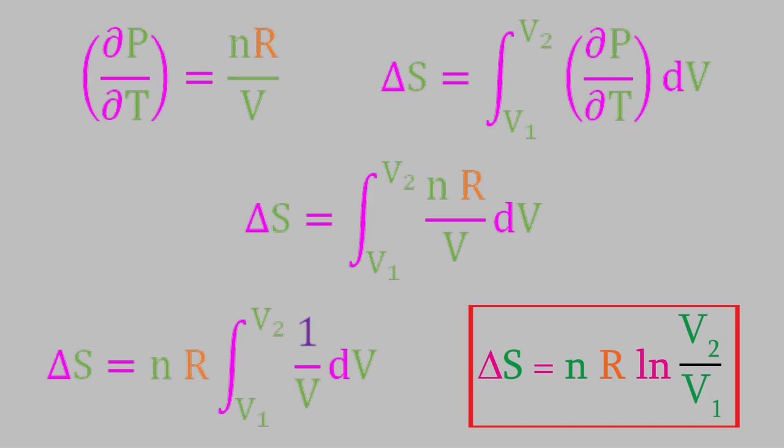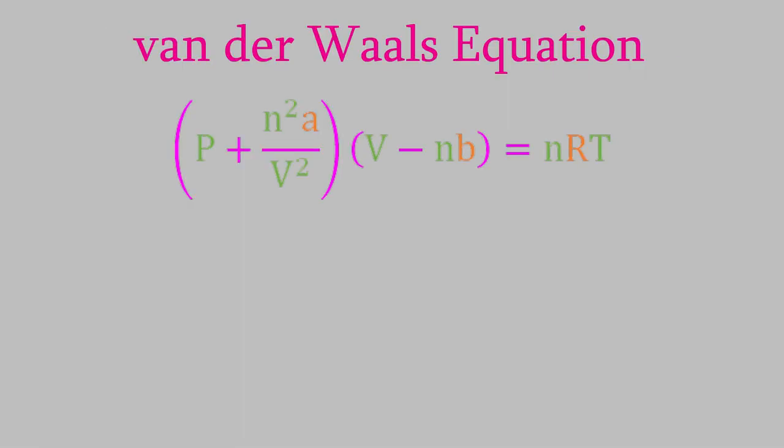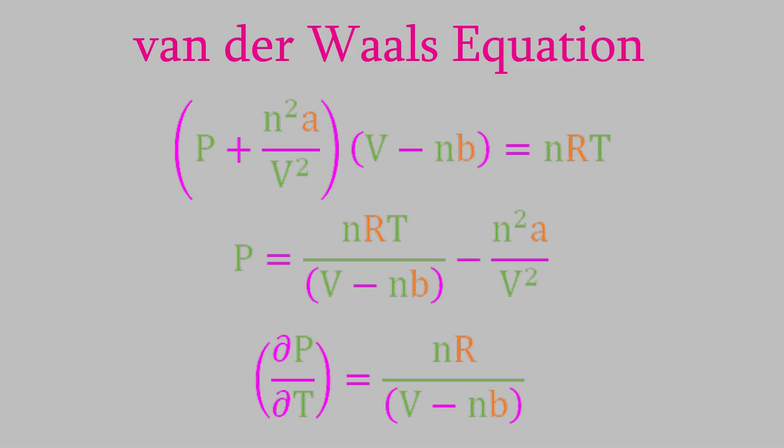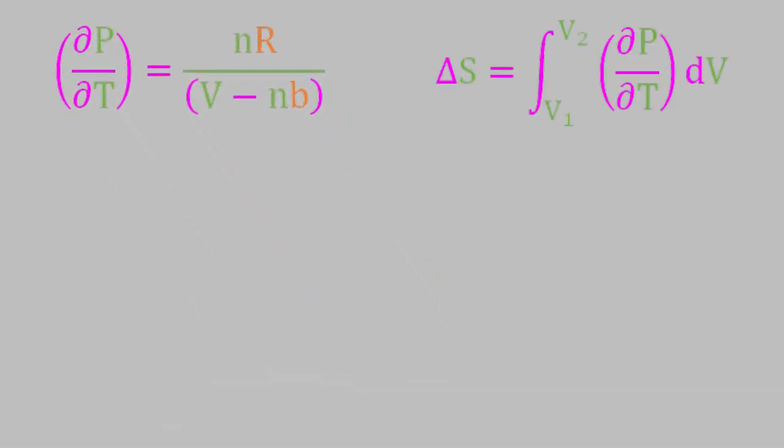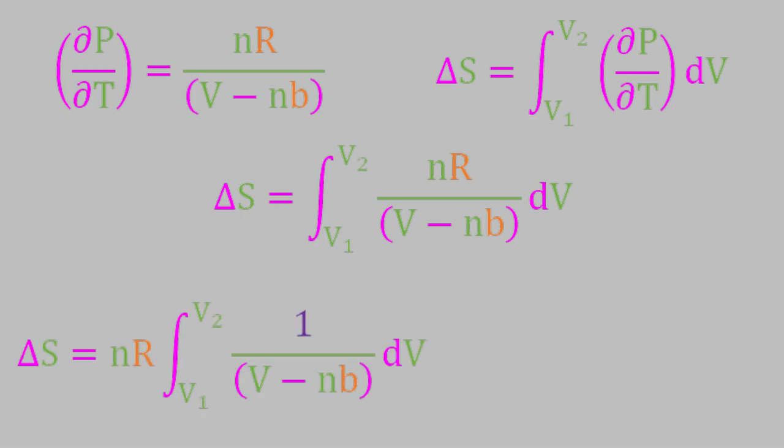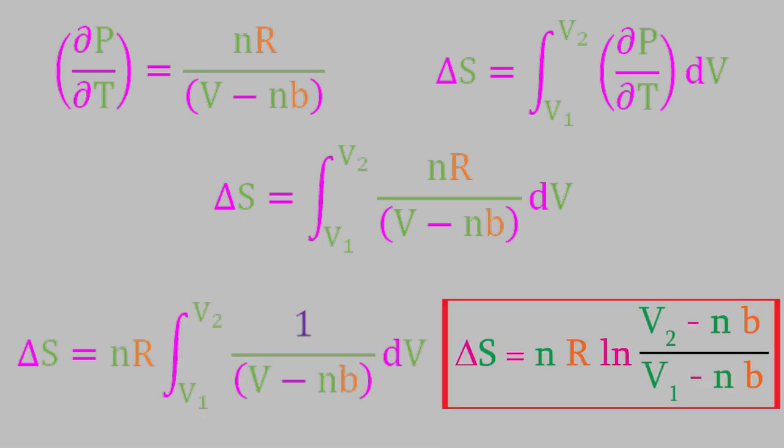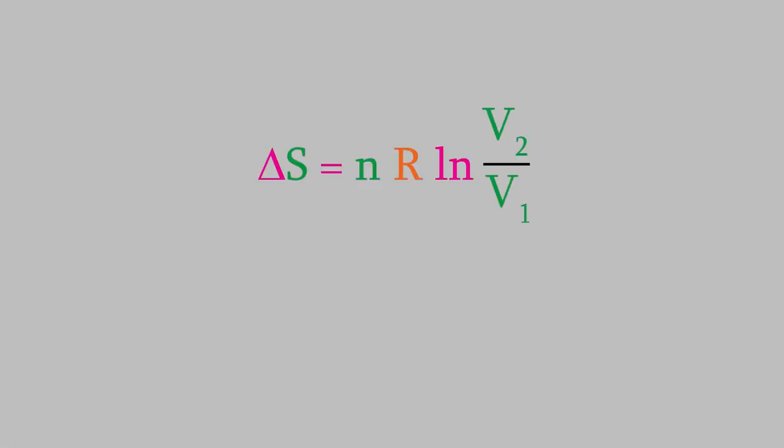Notice that we could even use this expression to get the entropy for a non-ideal gas. For example, we could use the van der Waals equation instead of the ideal gas law to get an expression for P. If we do that, we'll follow the same procedure as before. First, we solve for P, which gives us this. Now, we take the partial derivative with respect to T, which gives us this equation, which isn't too complicated. We can plug this into the integral and solve it, which gives us this result. So, we just used a Maxwell relation to find two useful equations for the entropy, one for an ideal gas, and one for a gas that obeys the van der Waals equation.